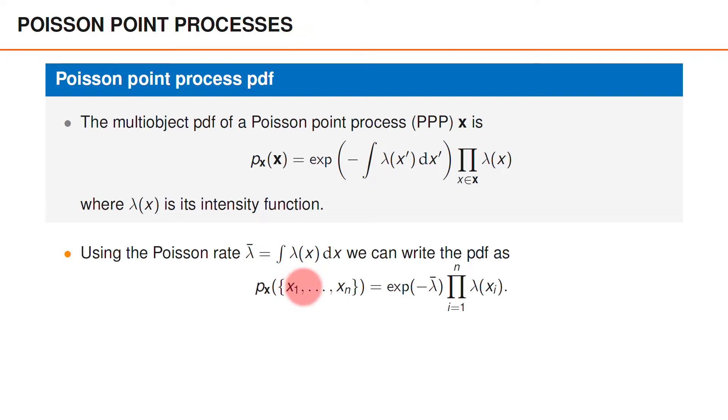If we denote the elements of the set as X1 to Xn, the multi-object PDF is e to the power of minus the Poisson rate times the product over i from 1 to n of lambda of Xi. By the way, you may recall that we derived an expression for Poisson point process densities when we presented clutter models for single object tracking. That expression was for an ordered density and resembled the expression presented here but contained a factor 1 divided by the cardinality of X factorial, that is 1 divided by n factorial.